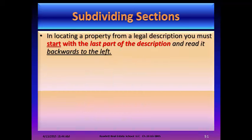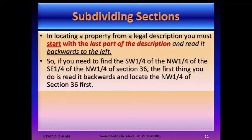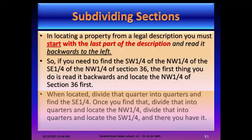When locating a property from a legal description, start with the last part of the description and read it backwards to the left. For example, to find the southwest quarter of the northwest quarter of the southeast quarter of the northwest quarter of Section 36, first locate the northwest quarter of Section 36, then divide that into quarters and find the southeast quarter, then divide again to find the northwest quarter, then divide again to find the southwest quarter.